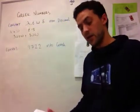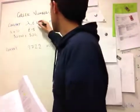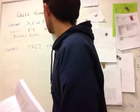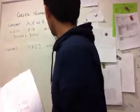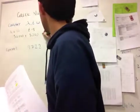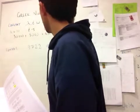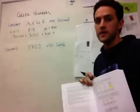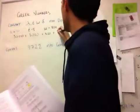The next symbol across is omega, which is equal to 800, and then the last symbol here is delta, and it's worth 4.